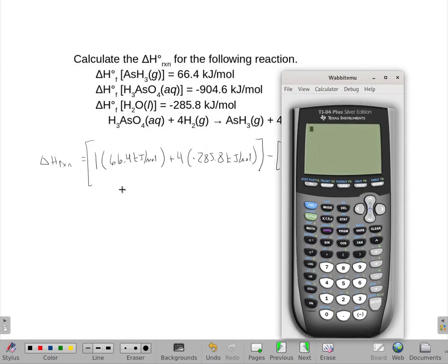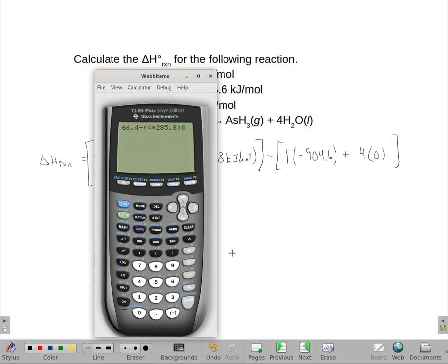All right, so I'm going to just start from the left. So I got 66.4, and I will just minus this, minus 4 times 285.8, close those parentheses. And minus a minus, so add 904.6. And we get as an answer of negative 172.2.